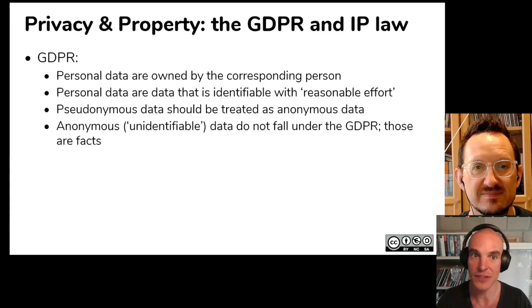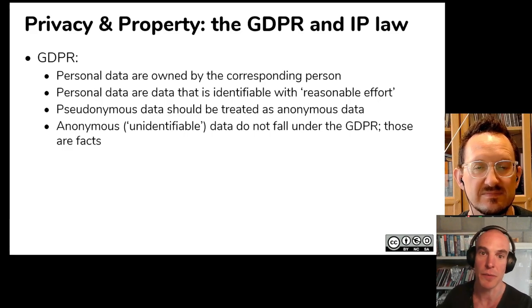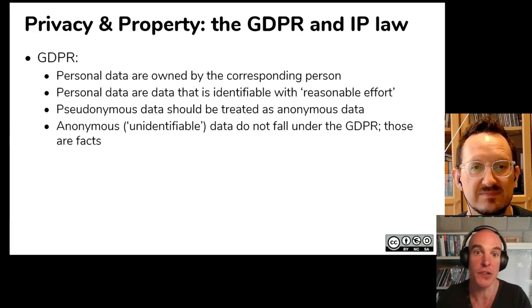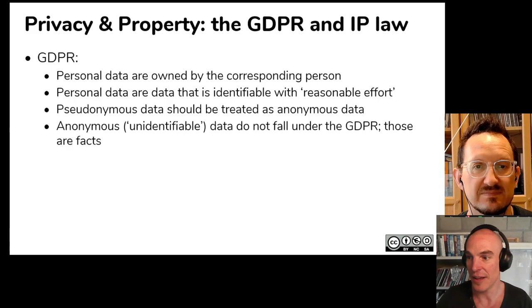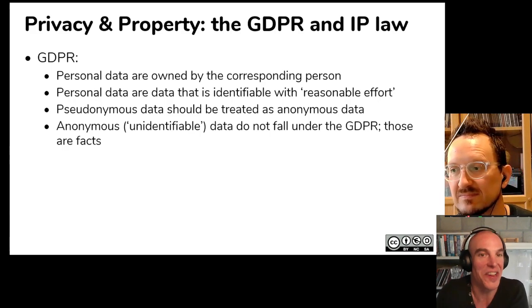Personal data are not necessarily always age or gender — personal data are data that are about a person. Any data point can be personal data, or not. Your social security number is always personal data, but for most data points we work with, whether they are personal data depends on whether they're linked in a dataset in a way that makes persons identifiable. Often you want to pseudonymize data by having a secondary dataset that strips off identifiable columns. The GDPR says that as long as it's pseudonymized — meaning you have a secondary dataset that allows you to identify the original — you should treat it as if it was personal data.